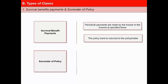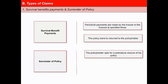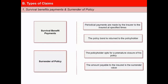The second type is surrender of policy, where the policyholder opts for a premature closure of his policy. This is a voluntary termination of the policy contract. A policy can be surrendered only if it has acquired paid-up value. The amount payable to the insured is the surrender value, which is usually a percentage of the premiums paid. There is also a minimum guaranteed surrender value, GSV.